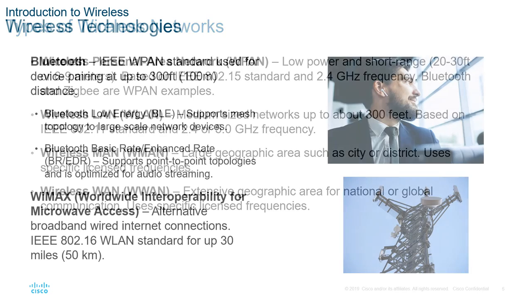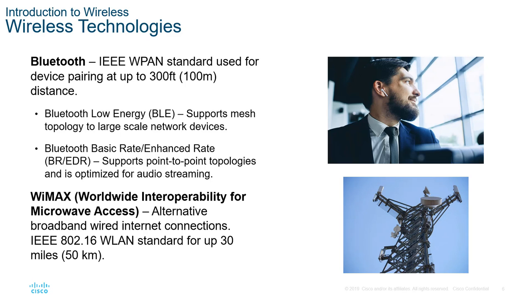Looking at some wireless technologies: Bluetooth is the predominant wireless PAN, covering under 100 meters — things like hands-free units in your car or a headset. Bluetooth has two main forms: Bluetooth Low Energy (BLE), which supports a mesh topology for larger-scale networks, and Bluetooth Basic Rate/Enhanced Data Rate (BR-EDR), which is point-to-point and more optimized for audio streaming. What version of Bluetooth you use depends on what you're trying to accomplish.